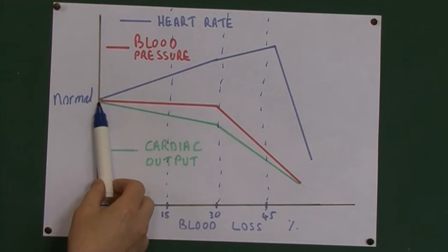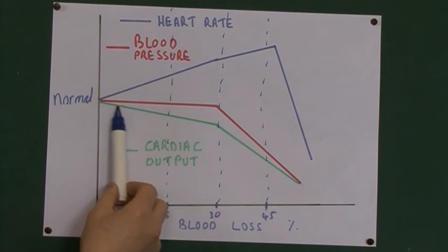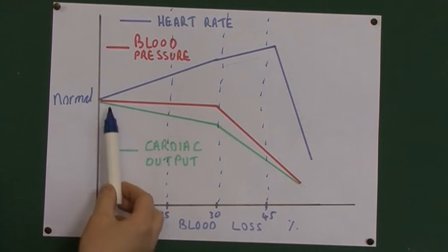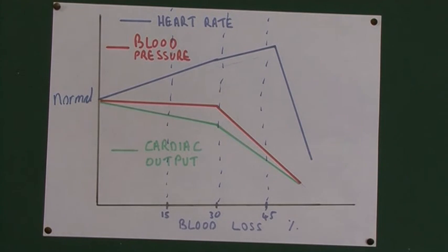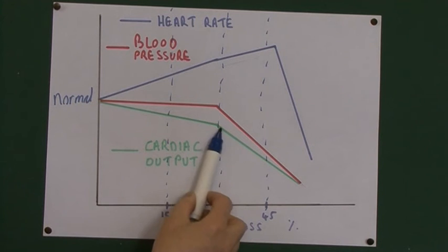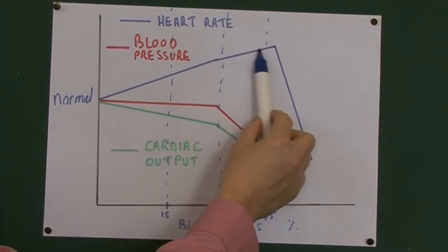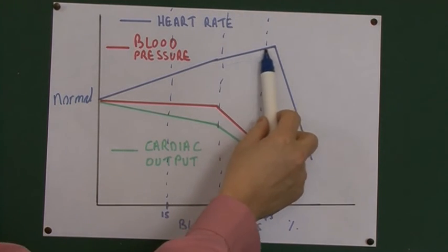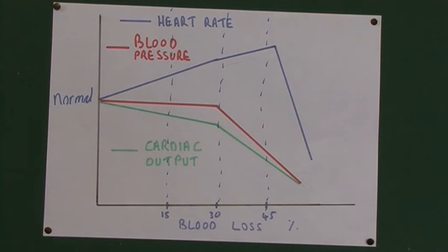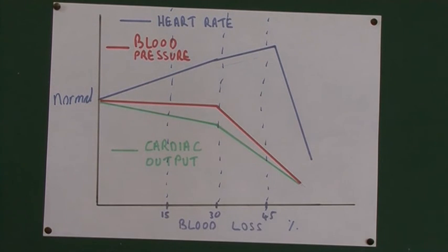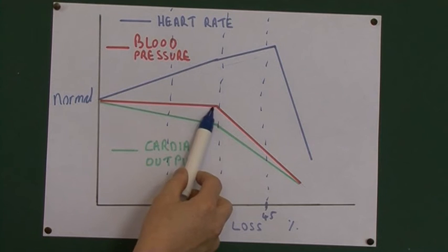Cardiac output does start to drop as a result of haemorrhage because total blood volume is lower, but at this stage tachycardia is compensating and maintaining blood pressure. When 30% of the child's blood volume has been lost, cardiac output declines even though tachycardia is still increasing — because much more blood has been lost and the heart works less efficiently at high contractile rates. The tachycardia continues, but cardiac output starts to drop, and the blood pressure begins to fall.